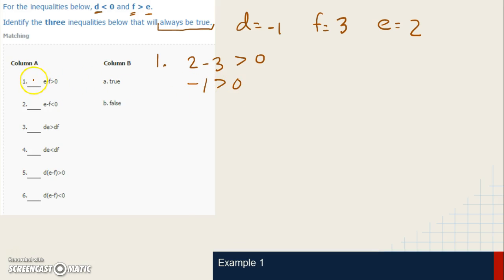Number 2: E minus F again, so 2 minus 3 again. And this time the sign says less than 0. So really important that you're paying attention to the signs. 2 minus 3, we know it's negative 1. Is negative 1 less than 0? Owing a dollar is definitely less than having no money. This is true.